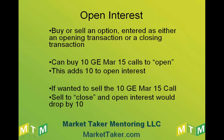When you buy or sell an option, it's entered as either an opening transaction or a closing transaction. For example, you can buy 10 GE March 15 calls to open, and this will add 10 to the open interest number. If you want to sell the 10 GE March 15 calls, you would sell to close, and open interest could drop by 10, depending on the scenario.